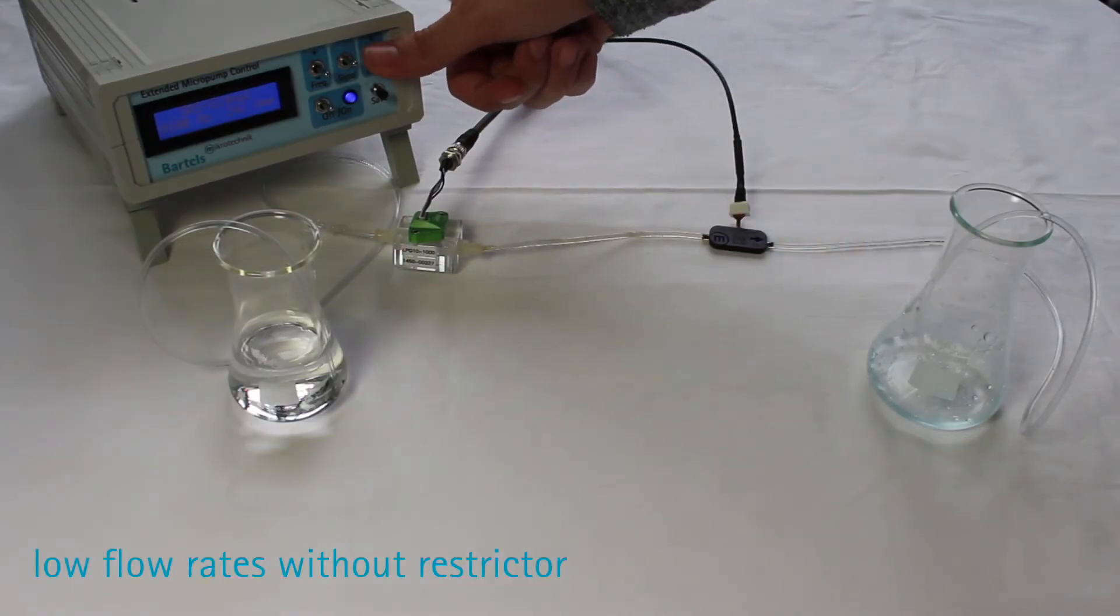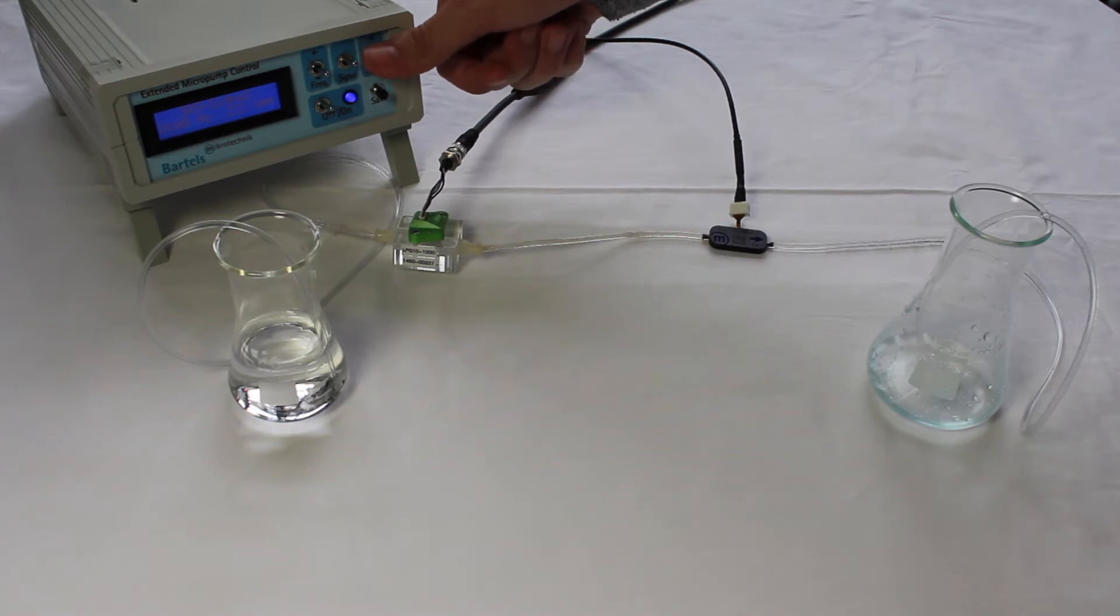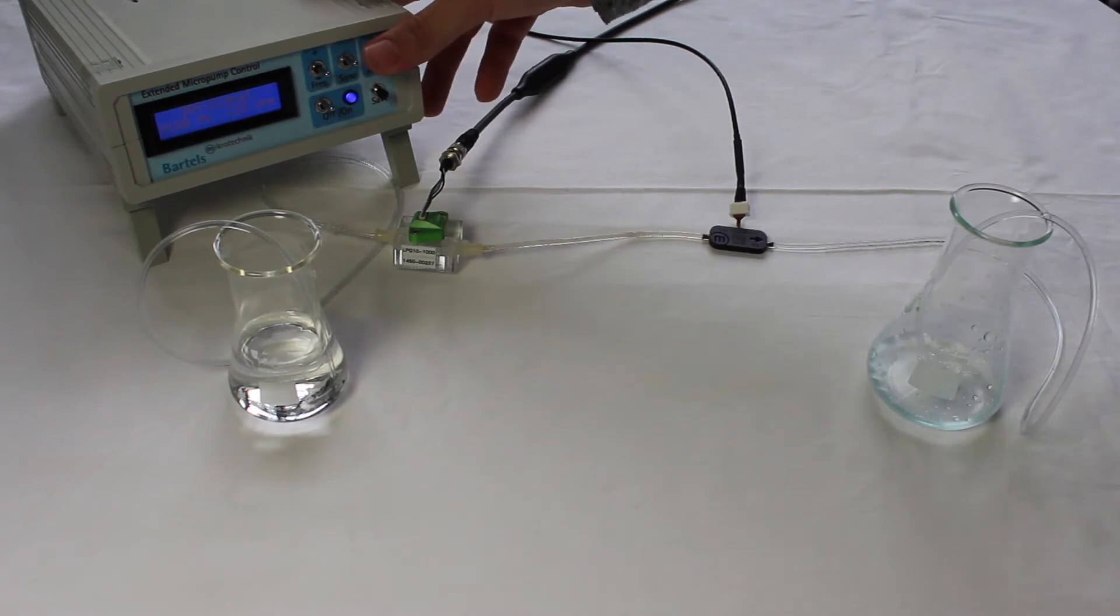A simple method to achieve low flow rates is lowering the amplitude, which on the other hand will decrease the overall performance of the pump because the typical pump curve of volume flow over pressure will then be shifted to a parallel curve.